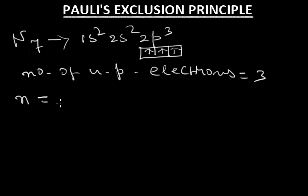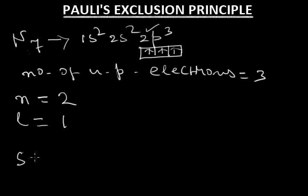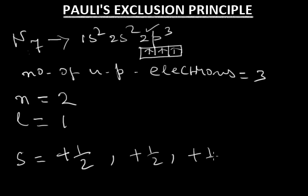For all three electrons, n is 2 because they belong to principal quantum number 2. Their azimuthal quantum number L is 1 because they belong to the p sub-energy level. All three electrons have parallel spin — that is, the same spin — so their spin quantum number is all plus half, or all minus half.